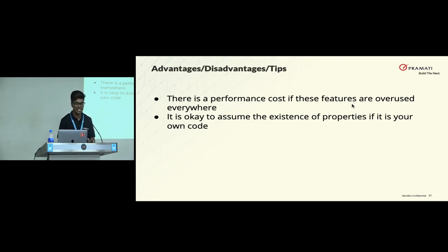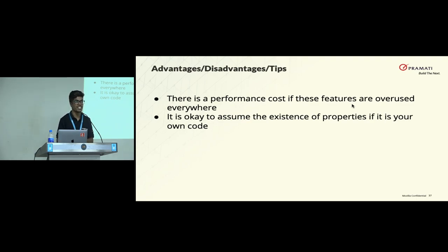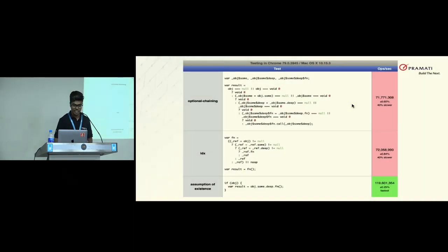There are two things to consider regarding the data object. If your code already makes an assumption that a property exists in the data object, there's no need to use optional chaining or null coalescing. But if your data object comes from the backend, then you should use it to avoid the top three errors discussed in the first slide. Performance-wise, it's about 40 times slower because of the transpiled code — this is from a test on jsperf.com. So use it responsibly.